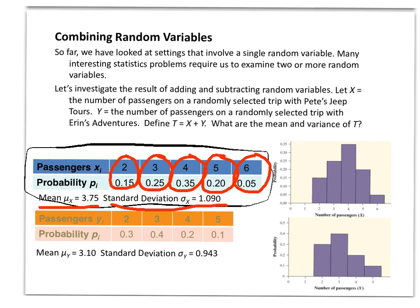If we do the same thing with Erin's data for her adventure tours, she gets 2 to 5 passengers — she never gets up to 6 — and there's her probability distribution. We can verify it's legitimate by checking that all probabilities add up to 1, covering all possible outcomes. We calculate her mean as 3.1 passengers on any given day, with a standard deviation of 0.943. Remember, the standard deviation is defined as the average error.